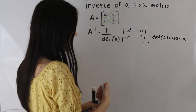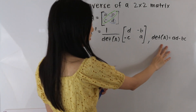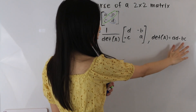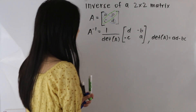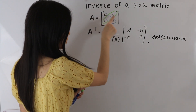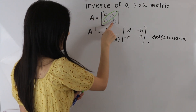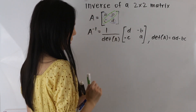And recall that the determinant of a 2x2 matrix is given by the following formula. We just multiply this diagonal here multiplied together, minus this diagonal here multiplied together.